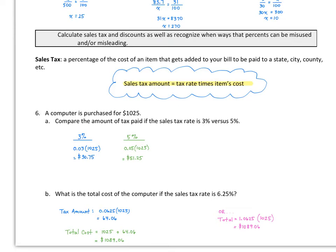If we're talking about sales tax, it's a percentage of the cost of an item that gets added to your bill to be paid to a state, city, county, etc. Whenever you go to a store, you pay sales tax. Sales tax is the tax rate times the item's cost. Keep in mind, this tax rate is the percent as a decimal.